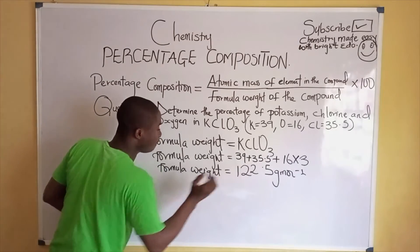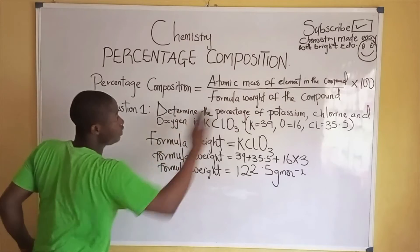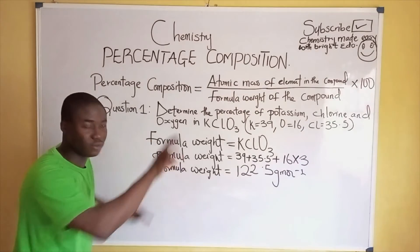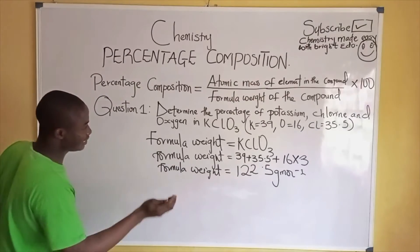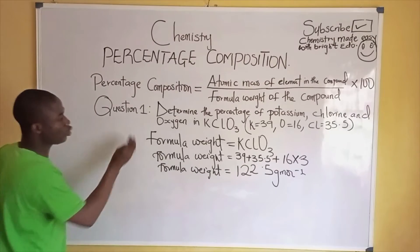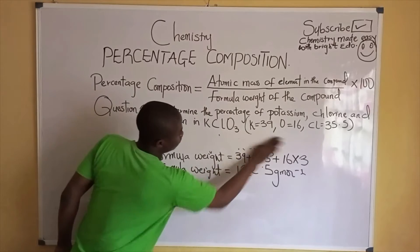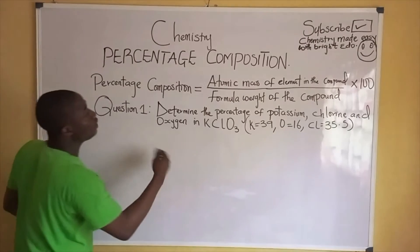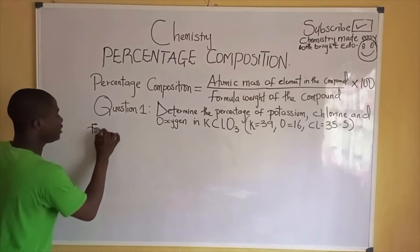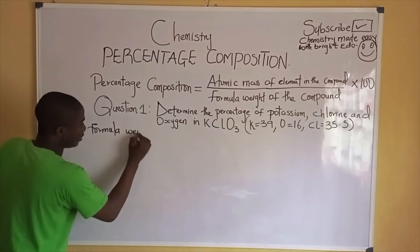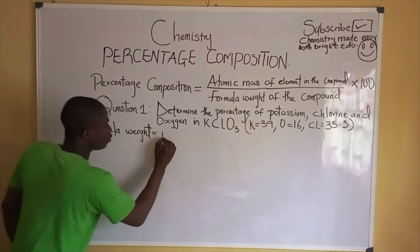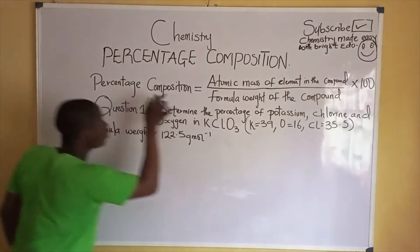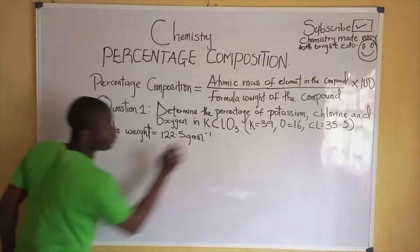Now we've successfully determined the formula weight of the compound. We can now determine the percentage composition of each element. The formula weight, which is the same as the molar mass, was determined to be 122.5 grams per mole. Let's get the percentage composition of each element of KClO₃.